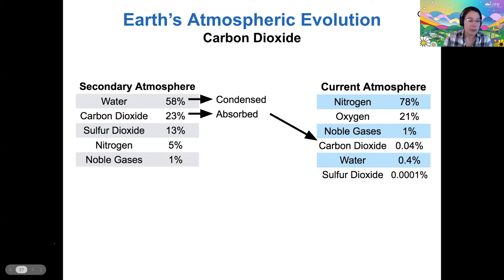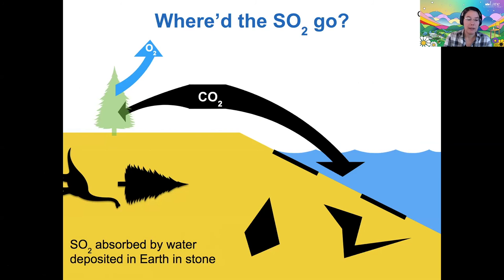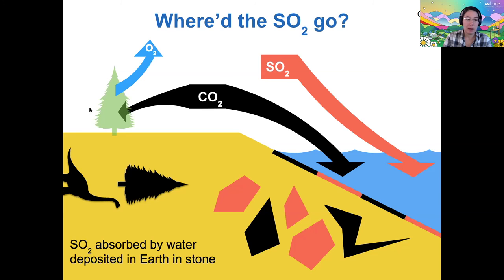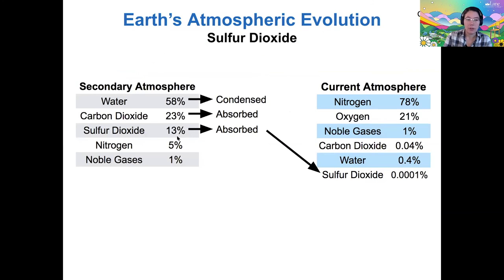Next, the sulfur dioxide can do a very similar thing. It can also dissolve into water, creating sulfuric acid, and then react chemically with rocks in the Earth, becoming deposited in stone — a similar path to CO2. Sulfur dioxide, of course, does not feed plants, so that pathway is missing for SO2. The sulfur dioxide, the third largest component of our secondary atmosphere, is now also very trace in our current atmosphere because it so efficiently became trapped within the crust.